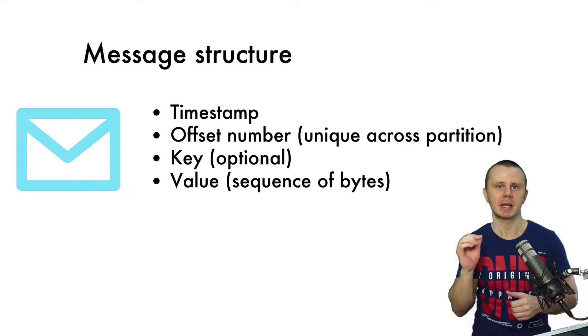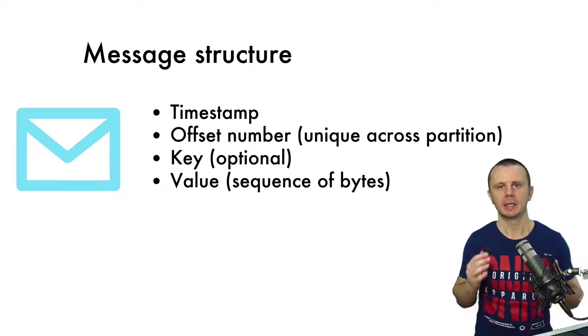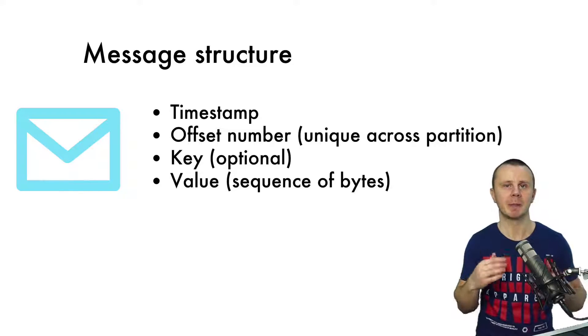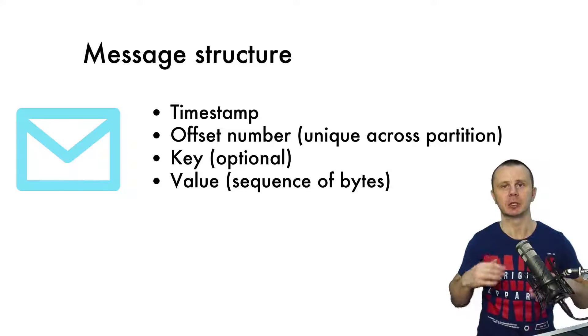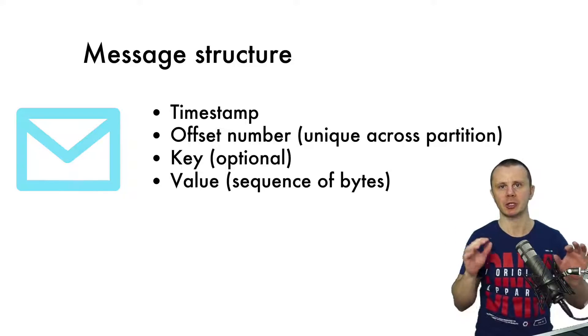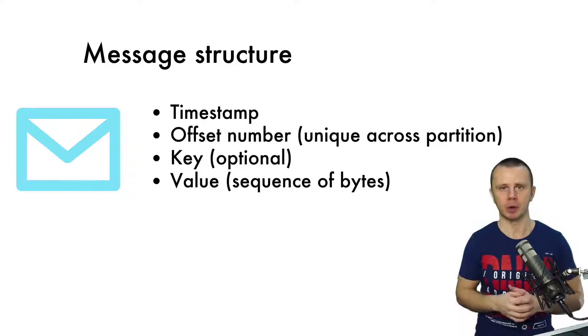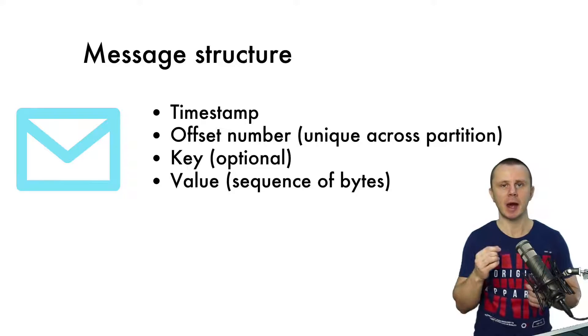The key, which is actually optional, you are able to use as an additional grouping mechanism for messages inside of the topic. For example, if there are multiple stores that send messages to a centralized Apache Kafka service about sales of every product, using the key you are able to set the name of each store that sends data to the Apache Kafka topic.